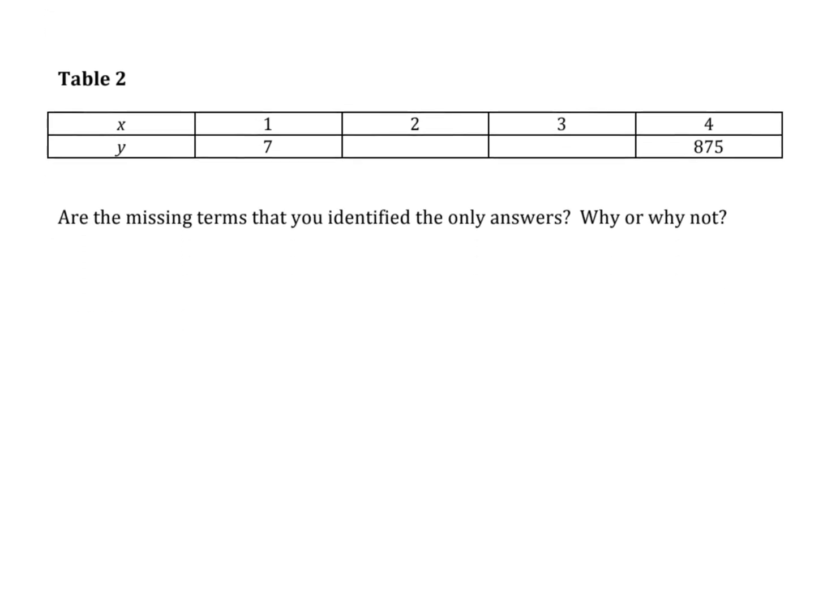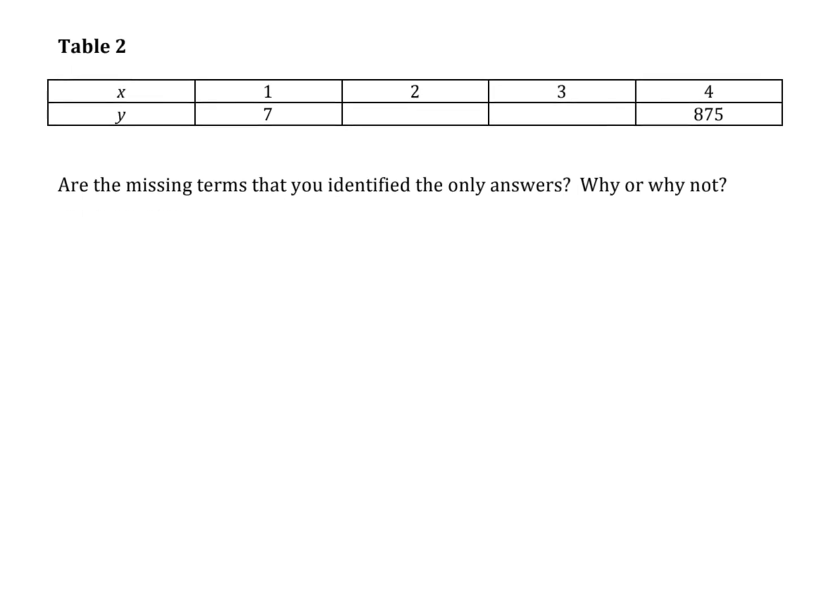So then let's consider table 2. If we use that same equation writing strategy, so I have to multiply by R 1, 2, 3 times starting at 7. So I have 7 times R times R times R is going to equal 875. So that would be 7R cubed equals 875. Now I can divide by 7 on both sides and get R cubed equals 125.